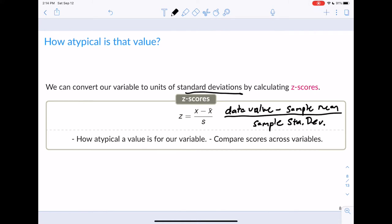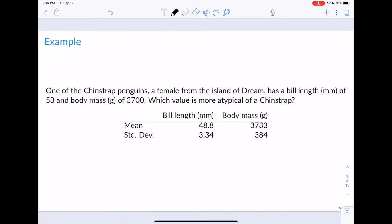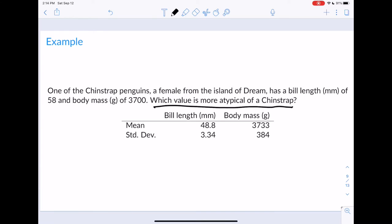Let's see how we would actually use this. One of our chinstrap penguins, a female from the island of Dream, has a bill length of 58 millimeters and a body mass of 3,700 grams. We might want to know which value is more atypical of a chinstrap. Is it more atypical to have a 58 millimeter bill length or a 3,700 gram body mass? When we're saying atypical, we're thinking about the larger the z-score, the more atypical that value is.